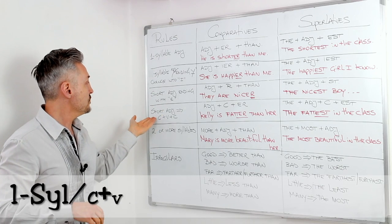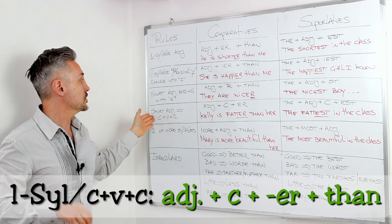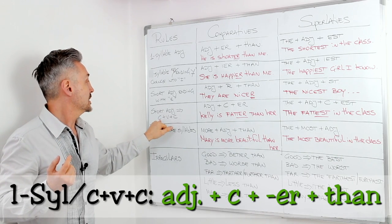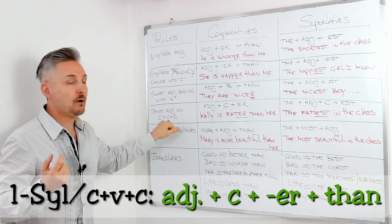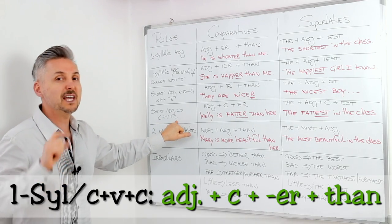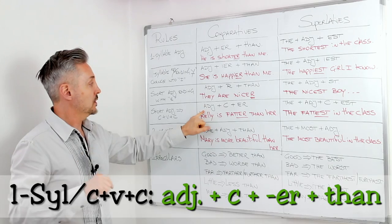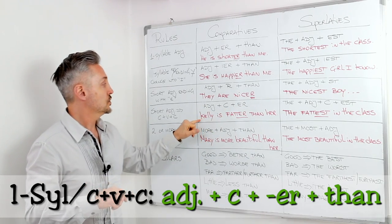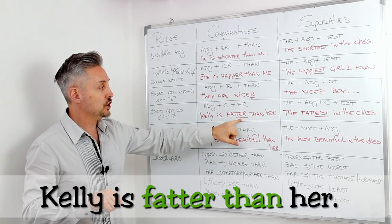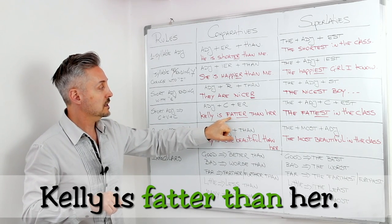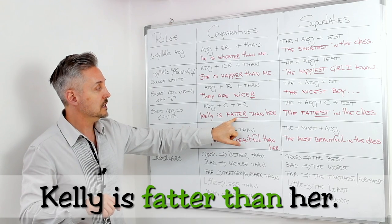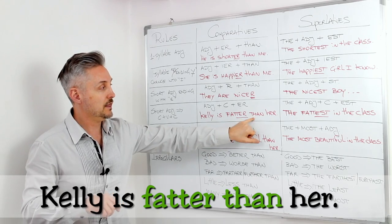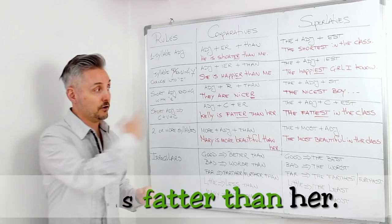So, the other rule, the fourth rule, it would be for short adjectives, one-syllable adjectives ending with consonant plus vowel plus consonant. We double it. So, for example, adjective plus consonant plus e-r. So, Kelly is fatter. So, consonant, vowel, consonant. We double the last consonant. Fatter than her, than another girl.